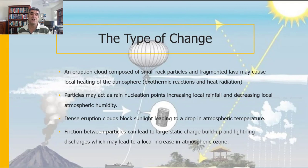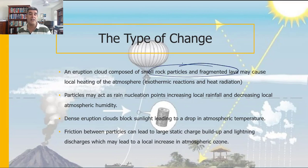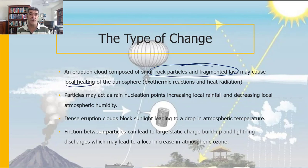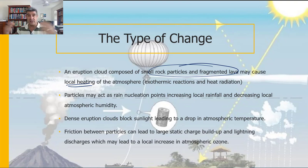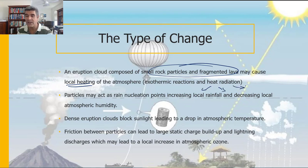What types of change can we see? Eruption clouds composed of small rock particles or fragmented lava can cause local heating effects. Exothermic reactions between elements and compounds released from the volcano and water or oxygen in the atmosphere can generate heat. Magma and lava are very, very hot, and that heat radiates away from the source, creating a heating effect on the air primarily, but also on the land.